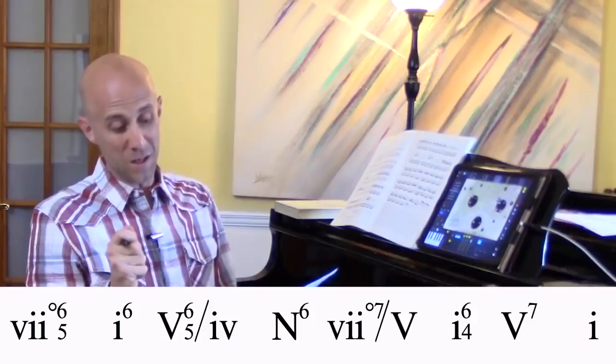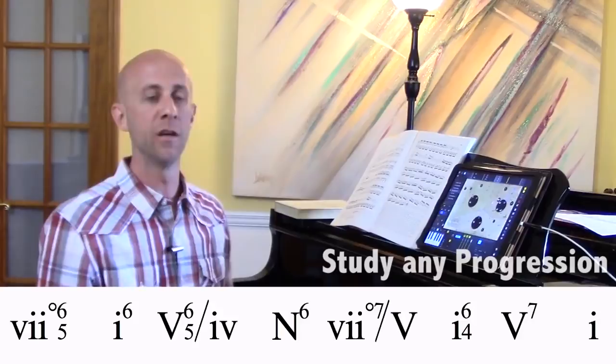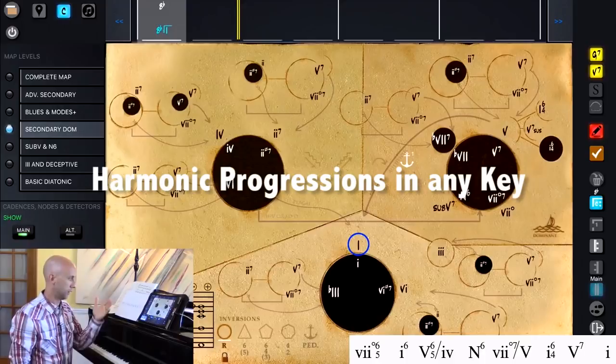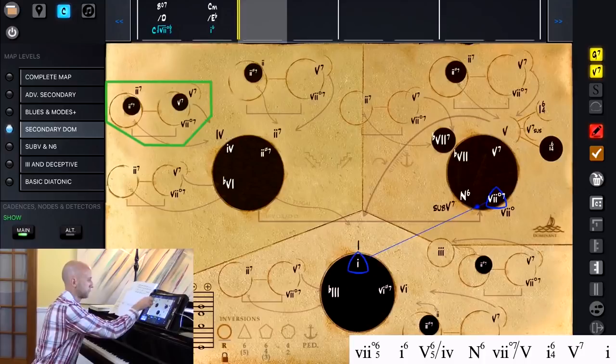It is the 7 Diminished 6 5, 1 6 5, 6 5 of 4, Neapolitan 6, 7 Diminished 7 of 5, 1 6 4 5 7 1. Alright, easy peasy—just kidding. If you're asked to replicate this in any key, we're going to show you exactly how to do that right now using Mapping Tonal Harmony Pro.